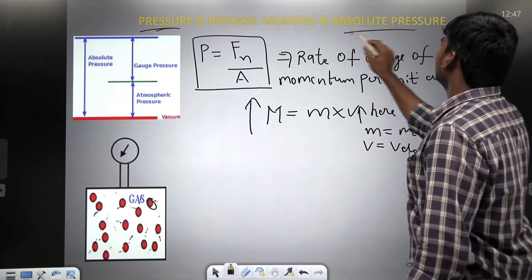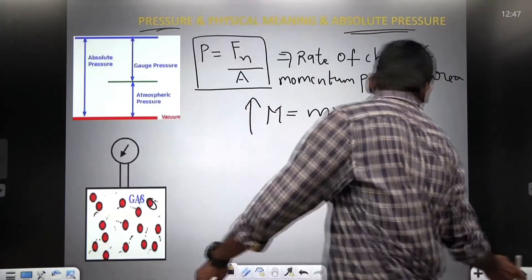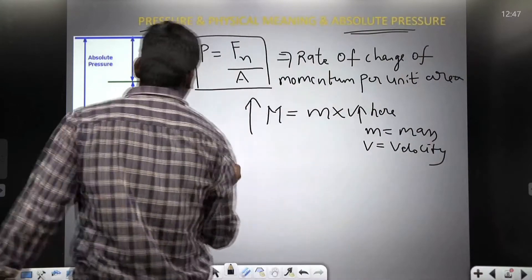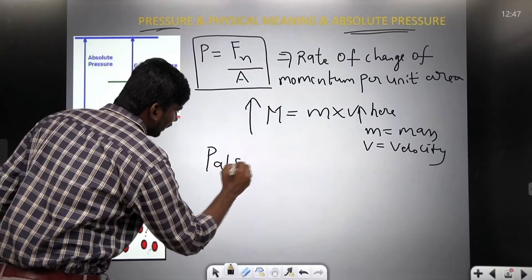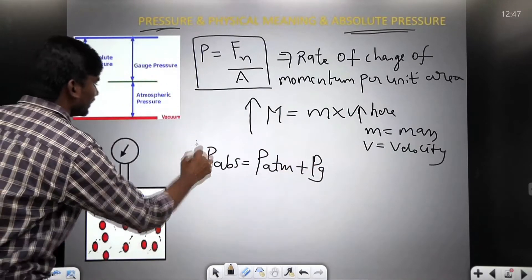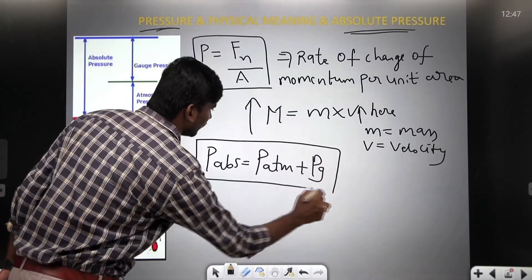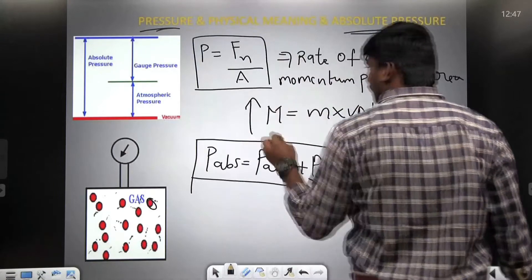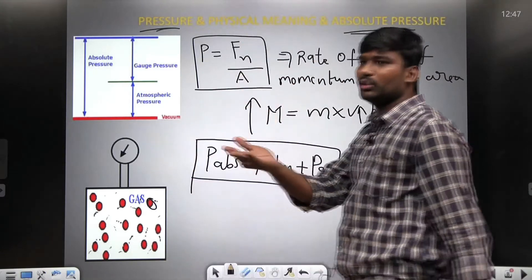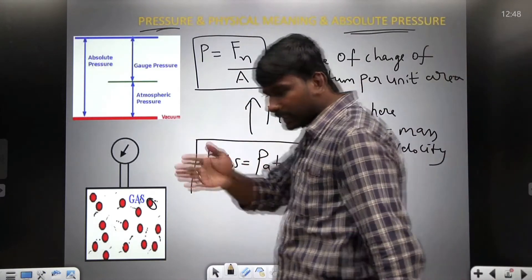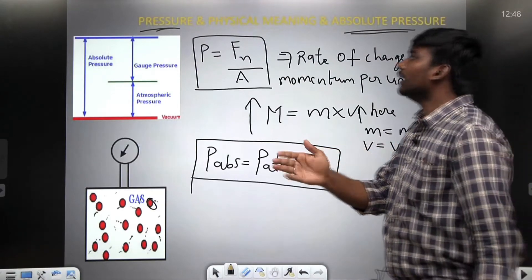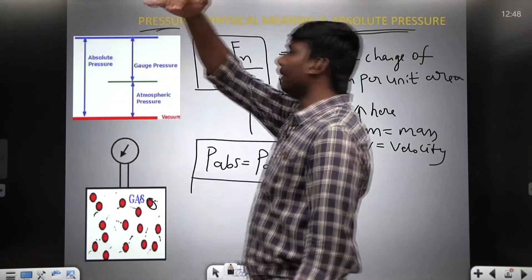Now, if you understand what is absolute pressure — absolute pressure is equal to atmosphere pressure plus gauge pressure. Similar to the absolute temperature: the temperature which is measured from absolute zero is called absolute temperature. Similarly, the pressure which is measured from absolute zero is called absolute pressure.